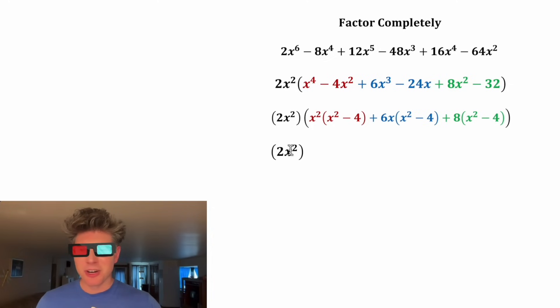Next, let's copy down the 2x squared, and each of these terms contains an x squared minus four, so let's factor out an x squared minus four. And then after we factor this out of the first term, we're left with an x squared. After we factor this out of the second term, we're left with a 6x, and after we factor it out of the third term, we're left with an eight.